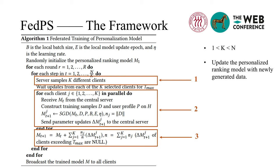All clients and the central server cooperate to train the personalized ranking model. In each step: first, the server samples key clients and sends the latest personalized ranking model to them. Second, each selected client updates the model for several epochs with the local log data. Then all the selected clients send the parameter updates to the personalized ranking model back to the server with the data kept locally. Third, the server aggregates the parameter updates to improve the current model. FedPS trains the shared personalization model in a synchronous way to prevent the server from waiting too long for clients with a poor connection or computation.